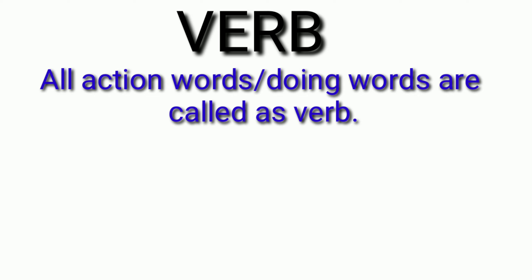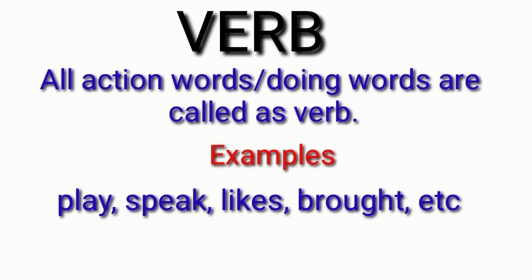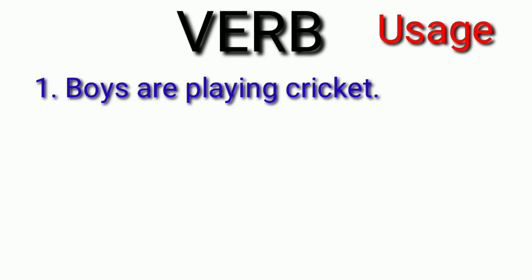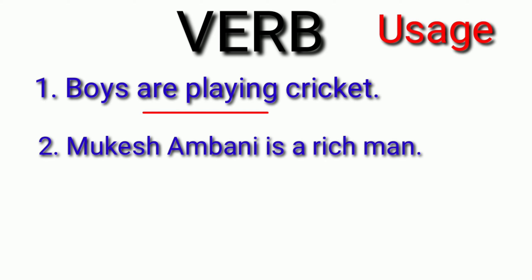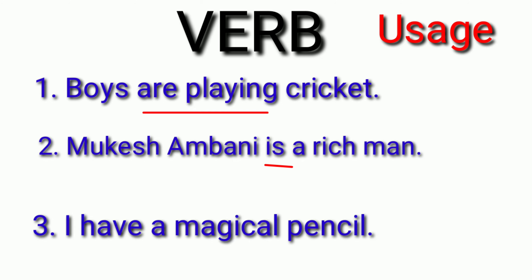Next is Verb. All action words or doing words are called verbs. Examples: play, speak, likes, brought, etc. Let's see the use. Boys are playing cricket — here boys are doing some action, are playing, so are playing is the example of a verb. Next sentence: Mukesh Ambani is a rich man — here is is a verb. I have a magical pencil — here have is a verb.